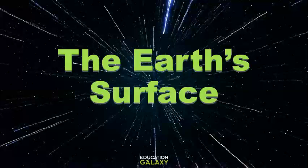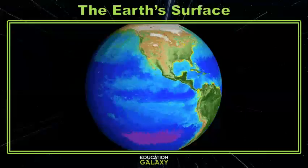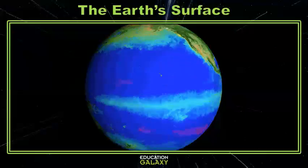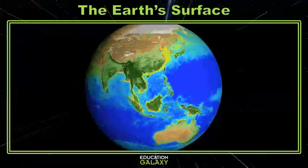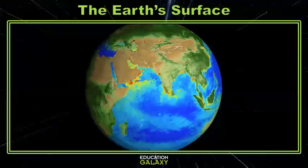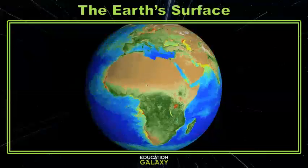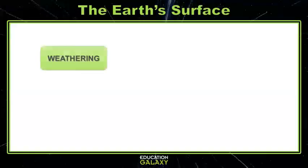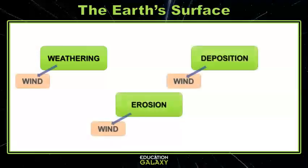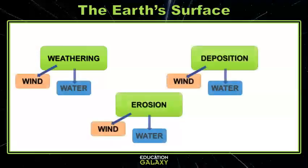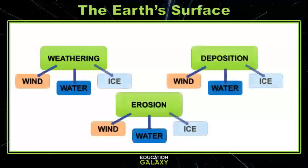Hey scientists, let's take a moment to talk about the Earth's surface. The surface of the Earth is made up of many varying features, but how did they all form? The surface of the Earth changes through weathering, erosion, and deposition, and each of these processes can be caused by wind, water, or ice.